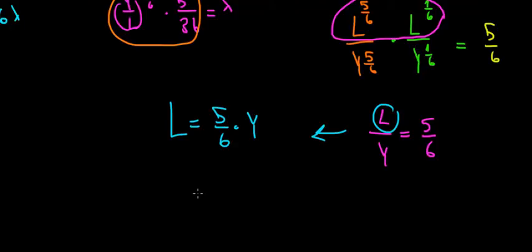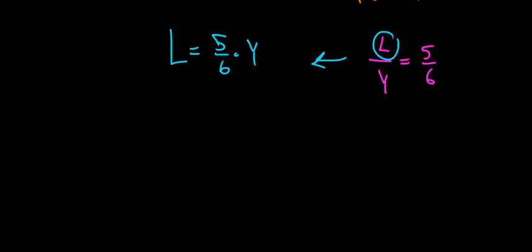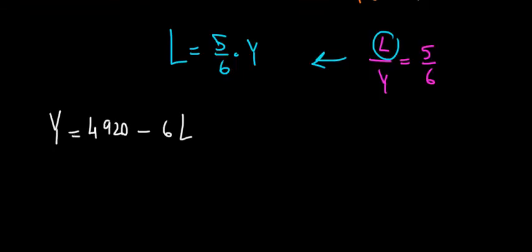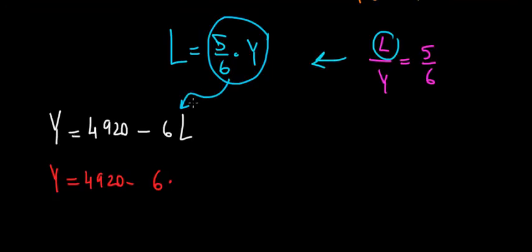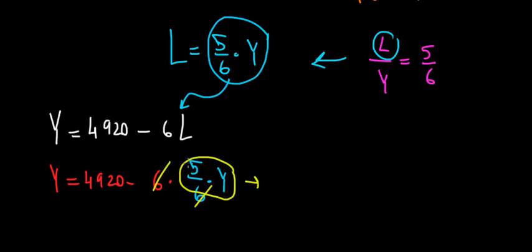Now we substitute l = (5/6)y into our budget constraint. The budget constraint is y = 4920 minus 6 times l. Substituting 5/6 · y for l gives: y = 4920 − 6 · (5/6) · y. The 6's cancel, so we get y = 4920 − 5y, and taking 5y to the other side: 6y = 4920.